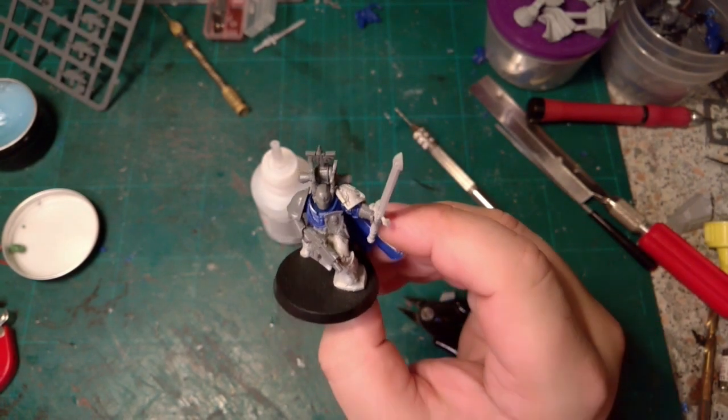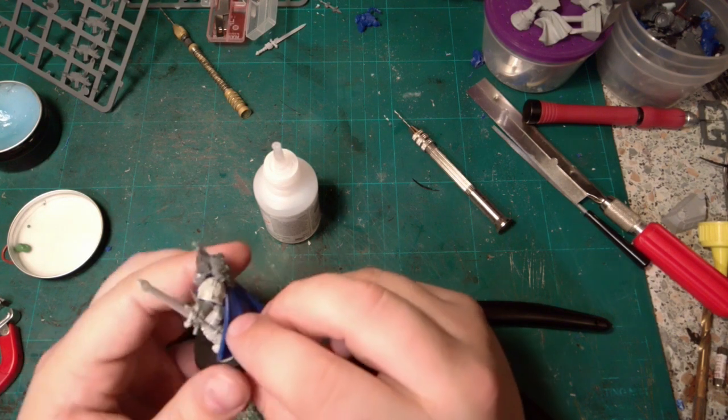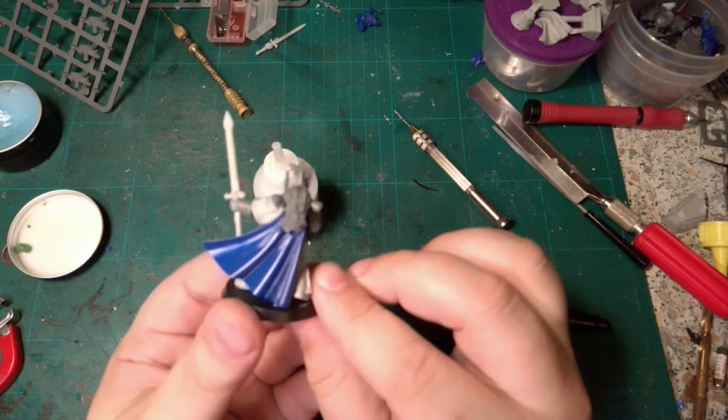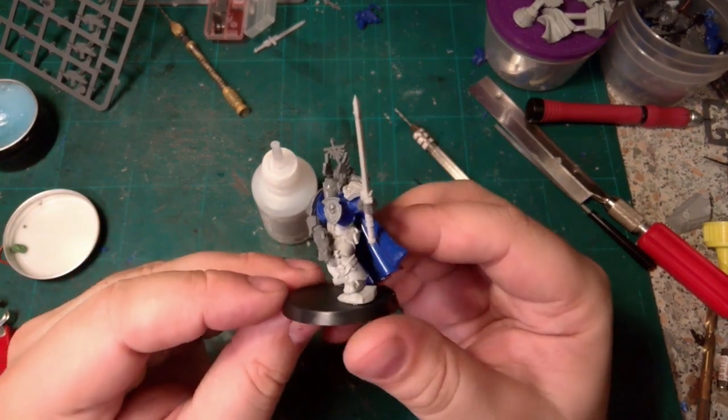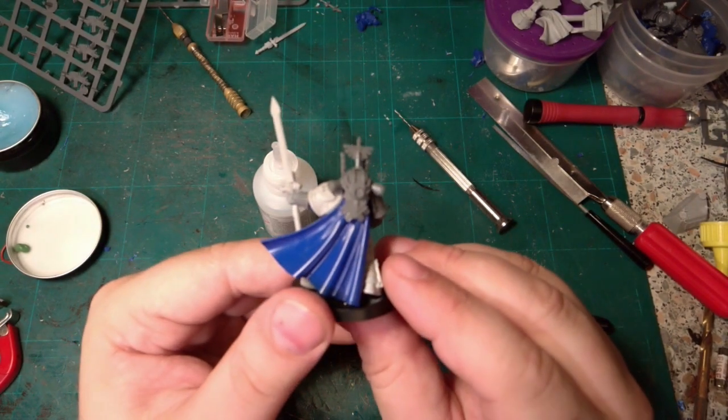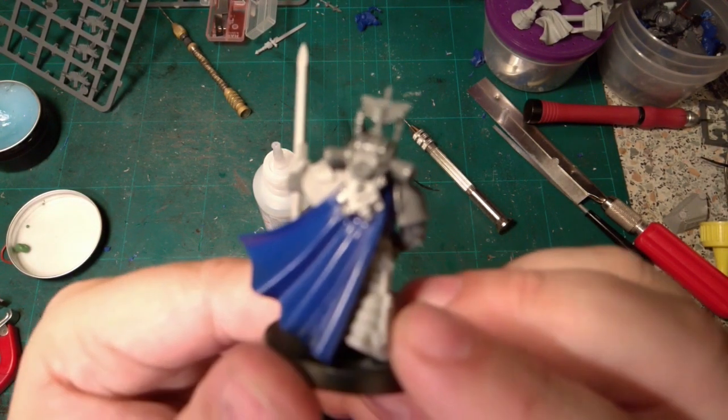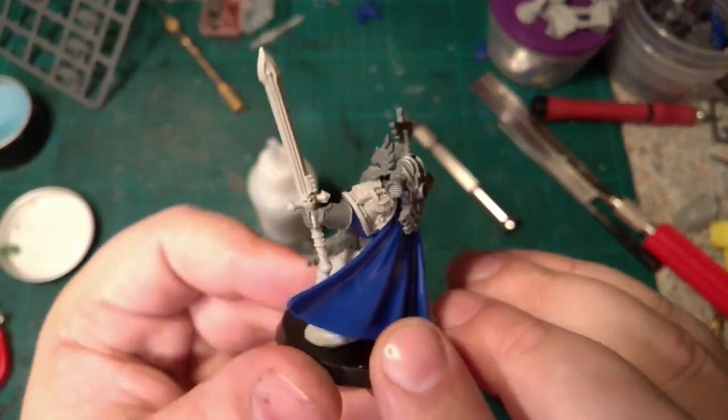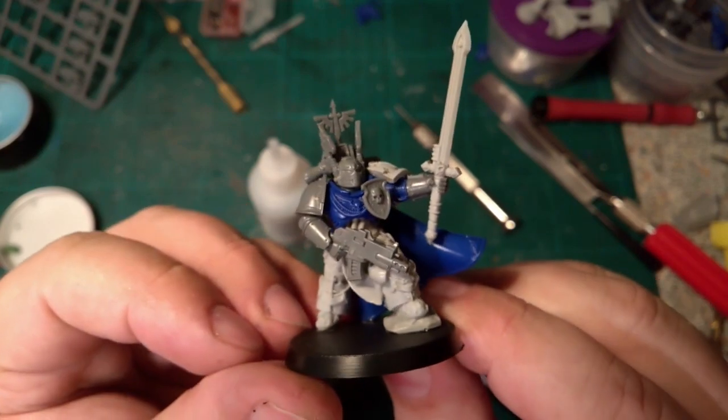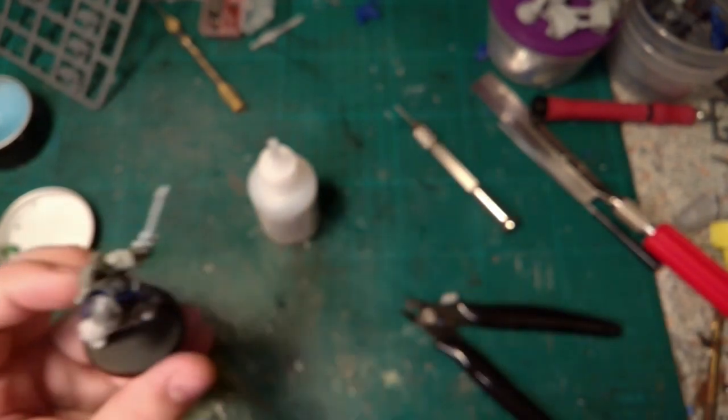I added the heraldry shield on the front as well, but yeah, I hope that helps with a bit of inspiration for making your own kitbashes. But those Terminator legs work lovely with the normal Primaris Intercessor kind of body. So yeah, I hope that helps and goodbye.